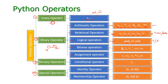The next one is bitwise operators. We are having bitwise AND, bitwise OR, bitwise XOR, and the tilde symbol which is used for negation — that is bitwise NOT. We also have shift left and shift right. These are the bitwise operators.